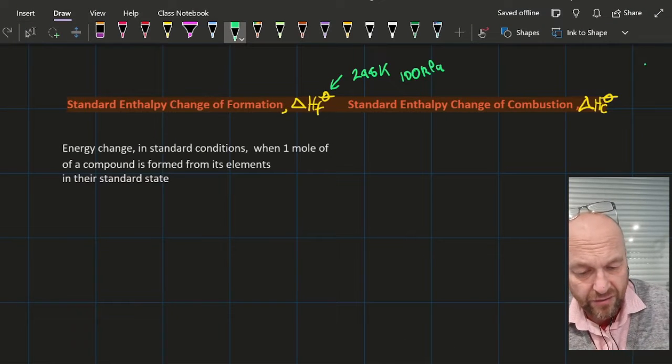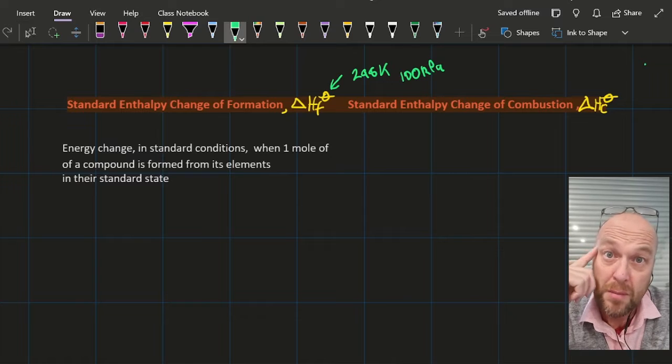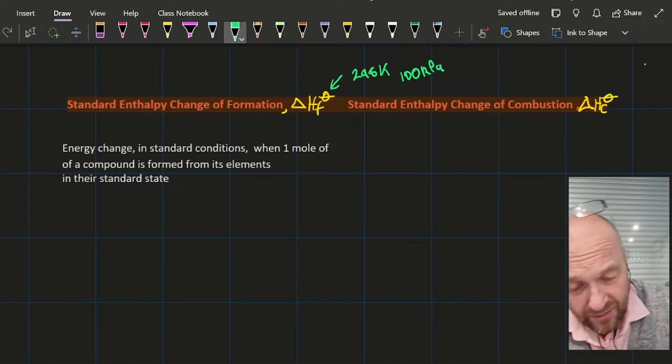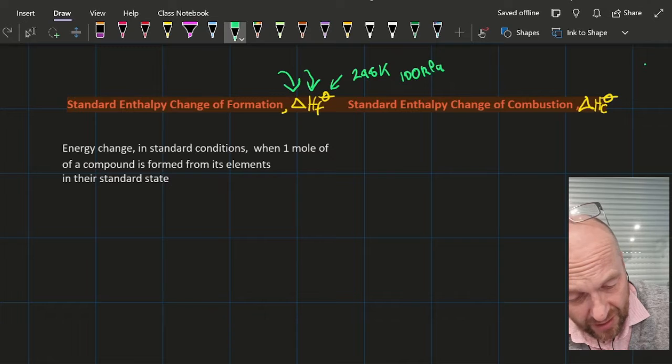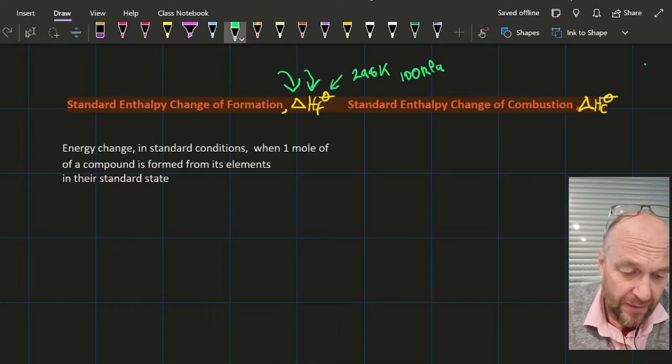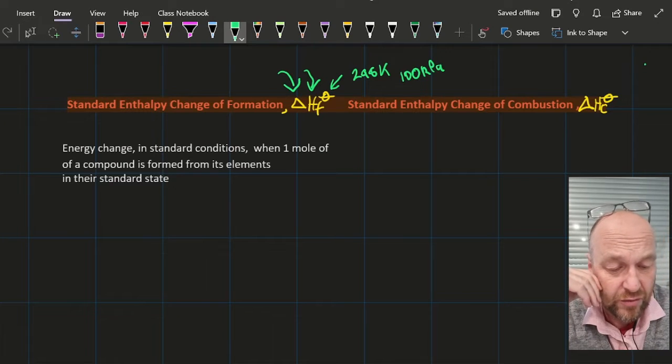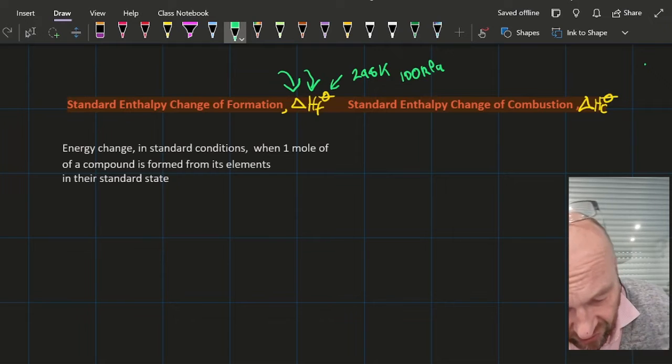Okay, let's start with the standard enthalpy change of formation. Enthalpy is measured in kilojoules per mole, but energy is measured in kilojoules. This triangle is delta, that means change. H is enthalpy and f is for formation. That plimsoll or Saturn sign—no one's quite sure—is 298 Kelvin and 100 kilopascals.